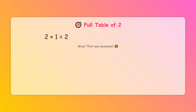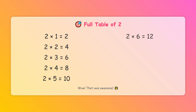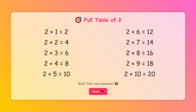2 times 1 equals 2. 2 times 2 equals 4. 2 times 3 equals 6. 2 times 4 equals 8. 2 times 5 equals 10. 2 times 6 equals 12. 2 times 7 equals 14. 2 times 8 equals 16. 2 times 9 equals 18. 2 times 10 equals 20.